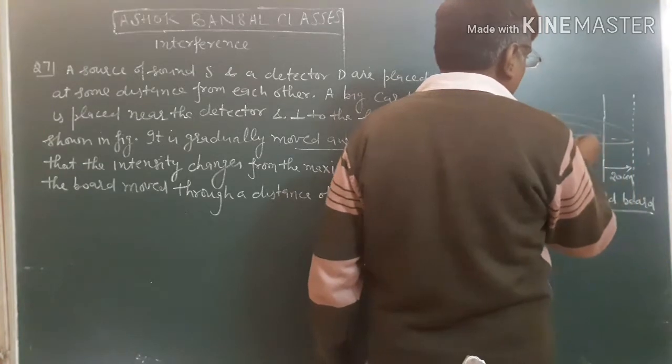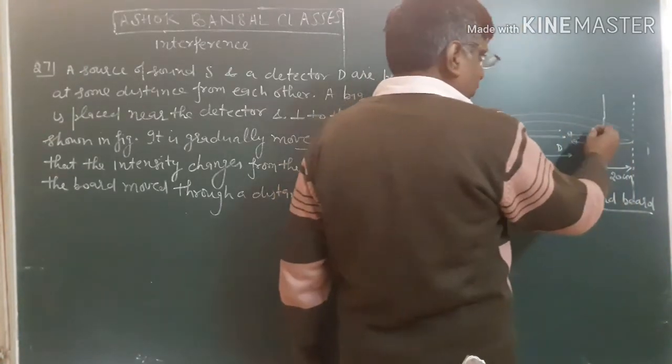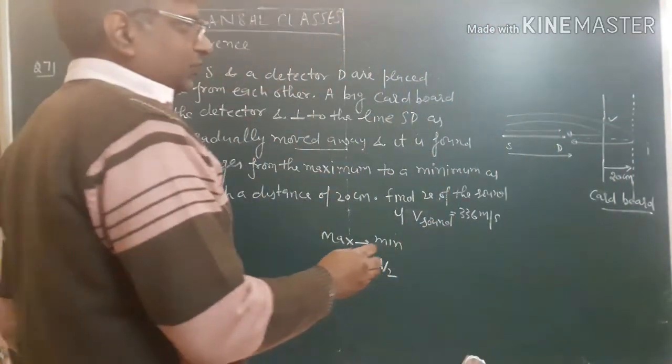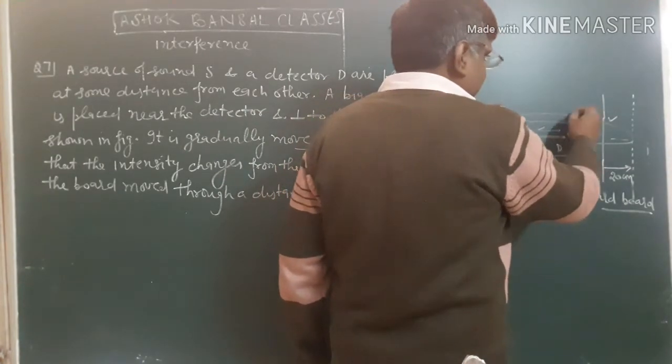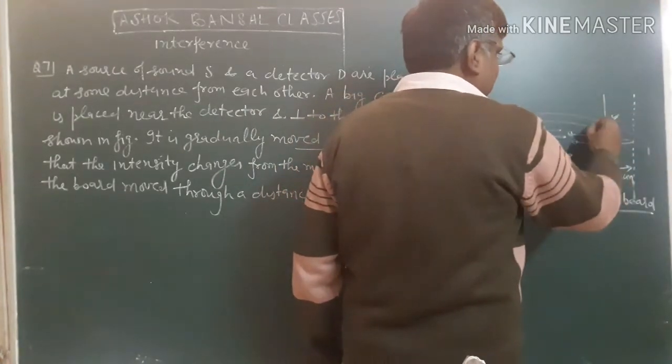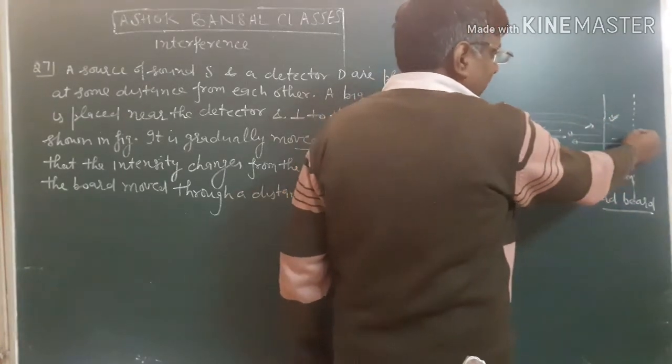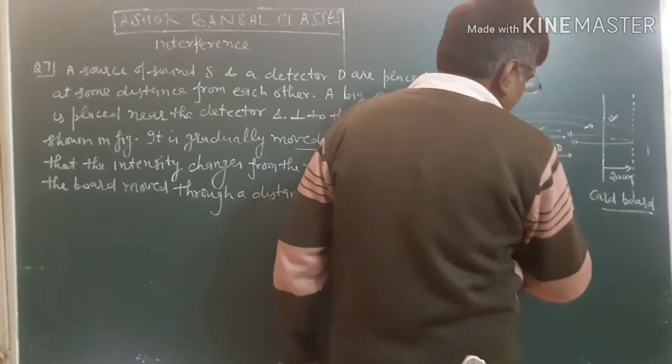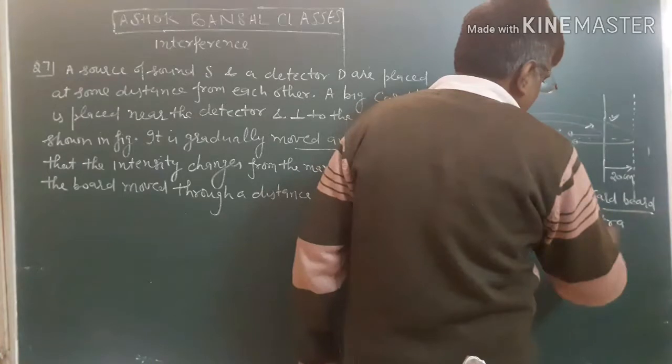The second wave is directed to this. How much extra path did it in comparison to the previous one? This distance plus this distance, the extra path, how much?